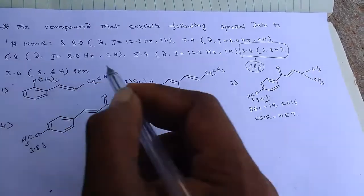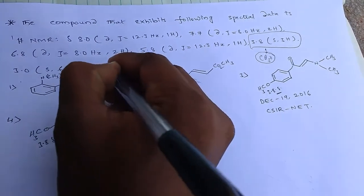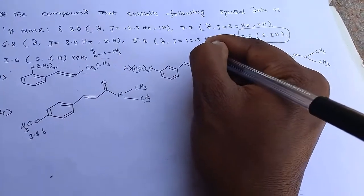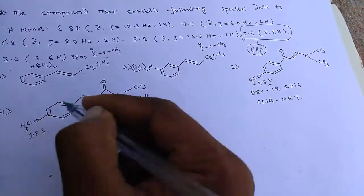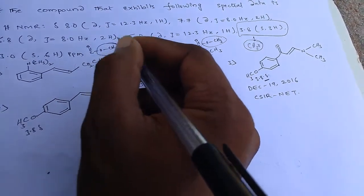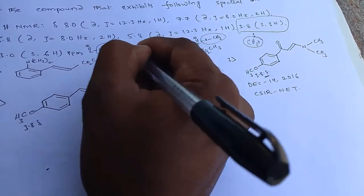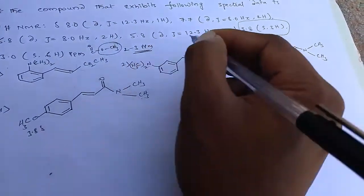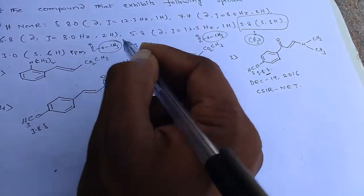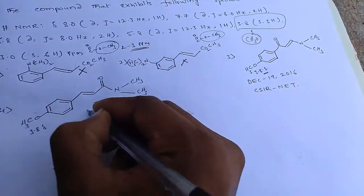If you observe the first and second options, in the first option there is no methoxy group but we have an ester C=O–O–CH₃. In the second option, we also have an ester C=O–O–CH₃ — no methoxy group, but ester methyl groups. Ester methyl groups have delta values of nearly 2 to 3 ppm. That's why 3.8 ppm absolutely belongs to a methoxy group, not an ester group. Hence we can eliminate the first and second options, leaving only options 3 and 4.